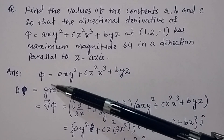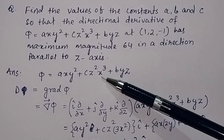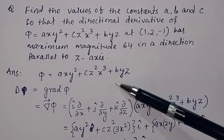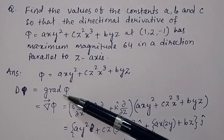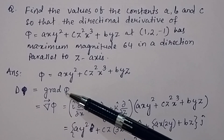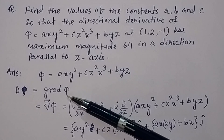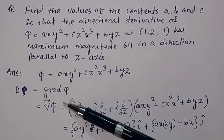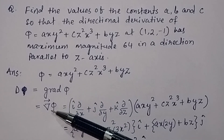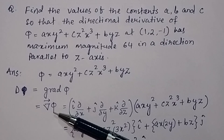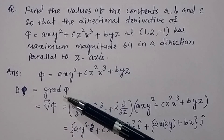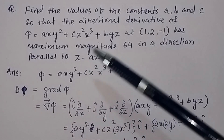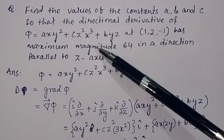The function phi is given as axy² + cz²x³ + byz. To find the directional derivative, we find the gradient. We know the gradient of a scalar function phi can be represented using the del operator, which is a vector operator. Taking del of a scalar function gives you the gradient of that scalar function.